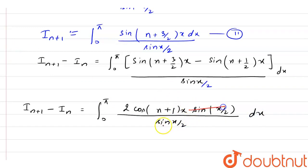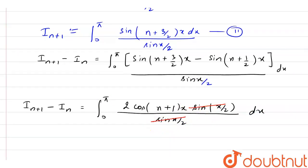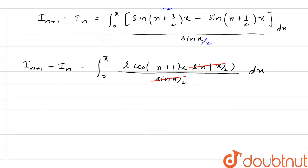This divided by, whole divided by sin x by 2 dx. As you can see on your screen, sin x by 2 will get cancelled out. So I can say the value of I_{n+1} minus I_n is 2 times integration of cos n plus 1 x, which is sin n plus 1 x divided by n plus 1 limit 0 to pi.